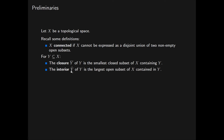The interior, denoted by Y-circle of Y, is the largest open subset of X contained in Y. Equivalently, the interior of Y is the union of all of the open subsets of X contained in Y. This is guaranteed to exist because the empty set is an open subset of X contained in Y. We then define the boundary: the boundary of Y is equal to the closure of Y minus the interior.